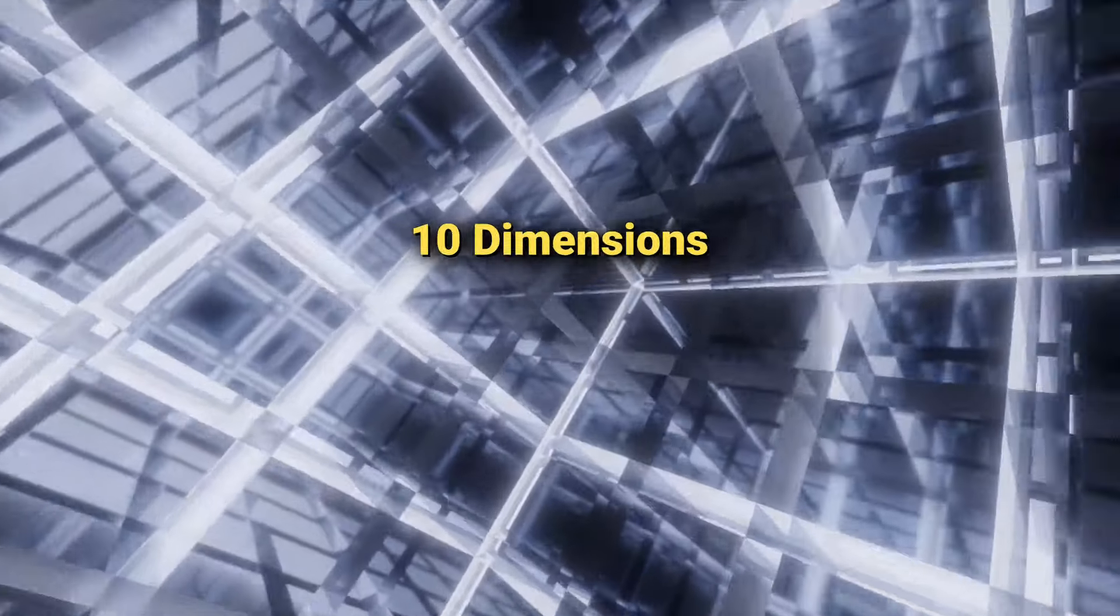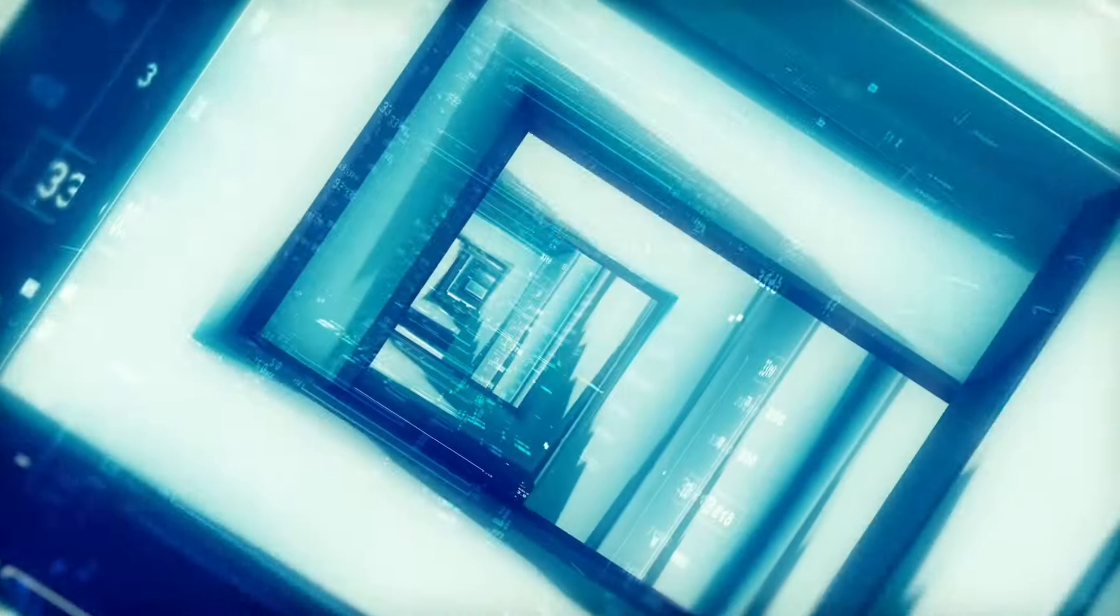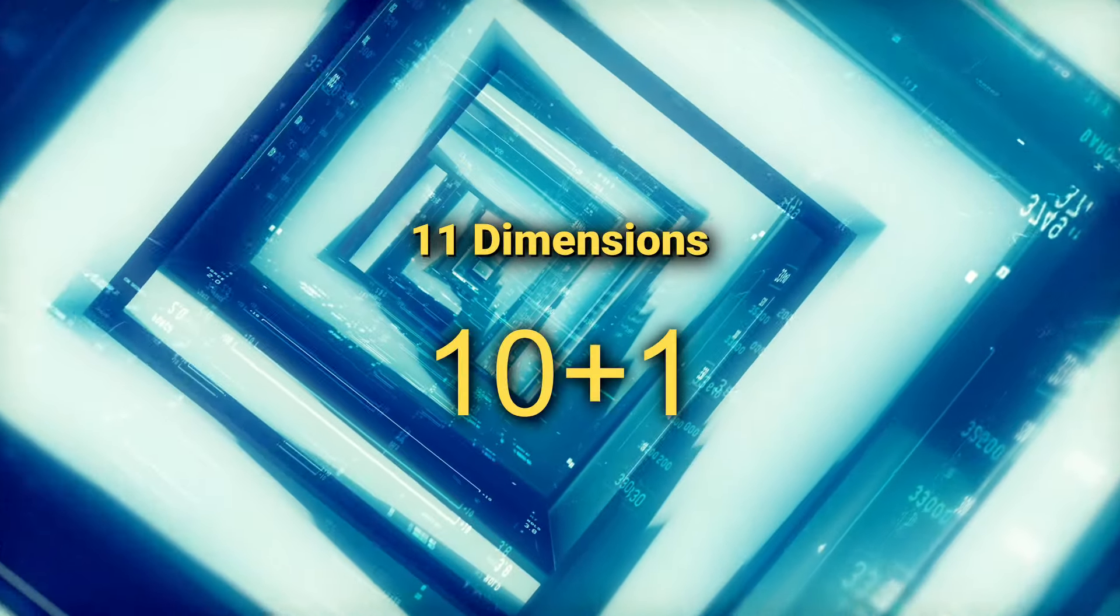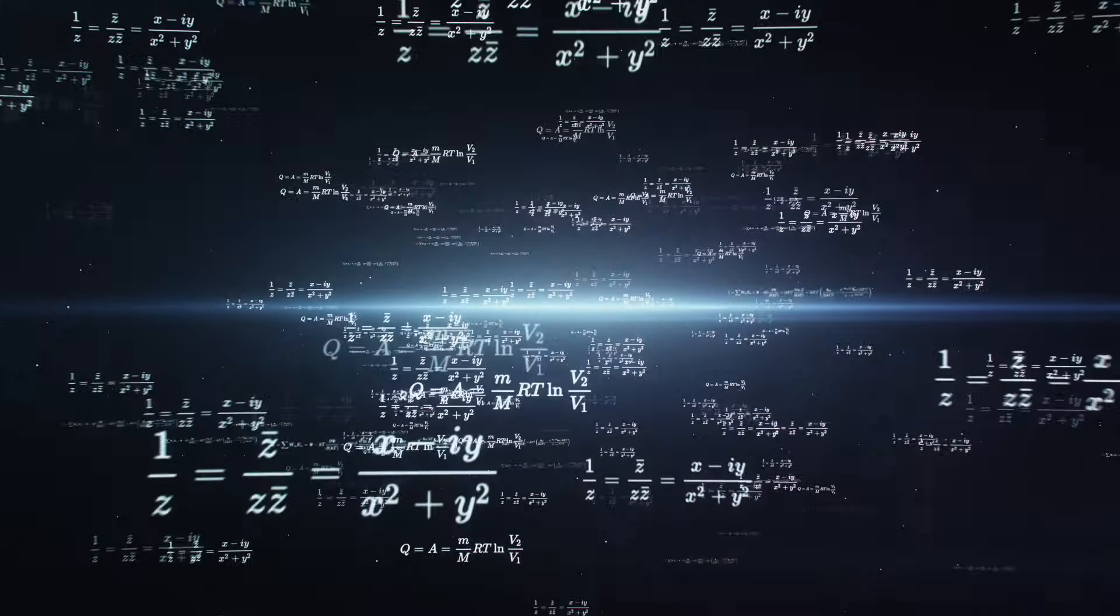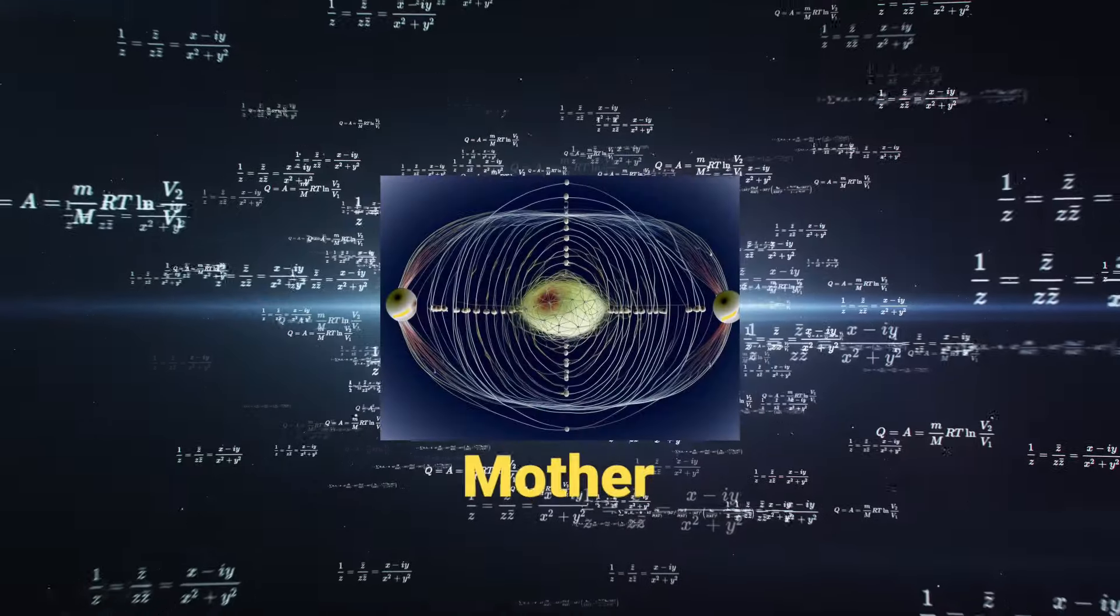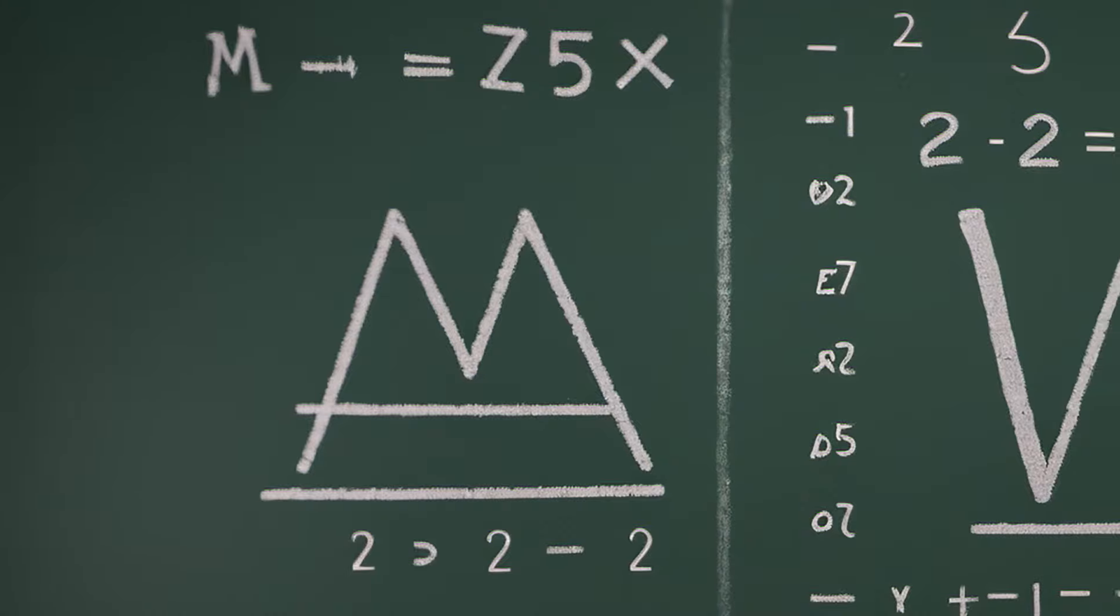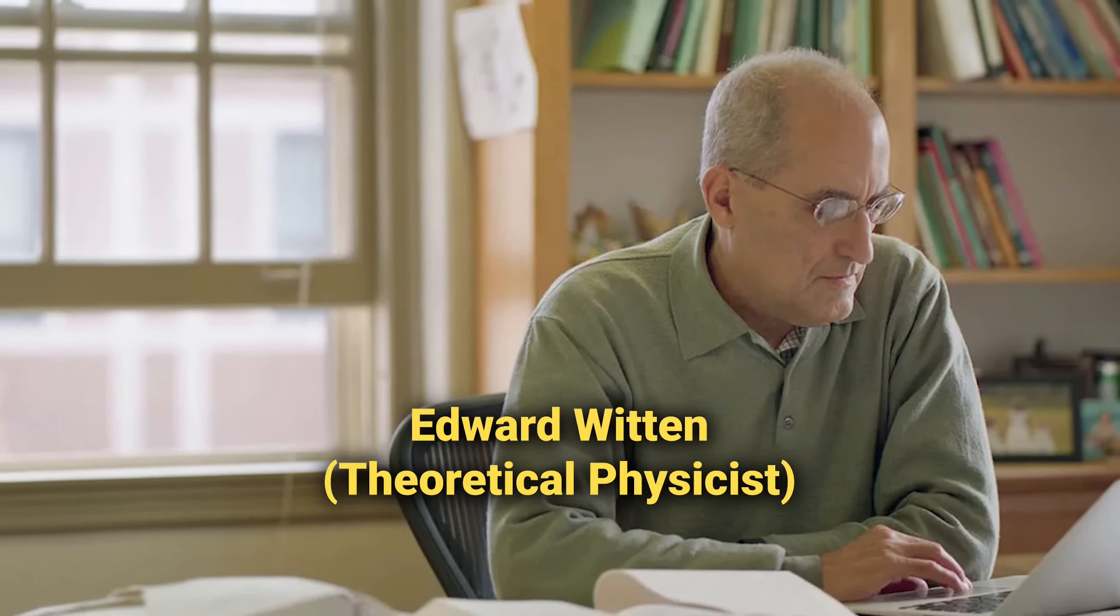By the way, when someone says that string theory is in 10 dimensions, they actually mean 9 plus 1, so 9 spatial dimensions and 1 time dimension, and when they say it's 11-dimensional, they mean 10 plus 1. The reason is they're usually talking about space-time dimensions as a whole. Apparently, the M in M-theory stands for matrix or membrane or mystery or mother, but I think it stands for an upside-down W for Witten, much like how the W of Wario is an upside-down M for Mario.